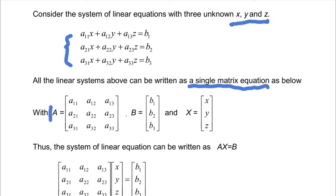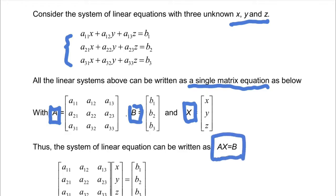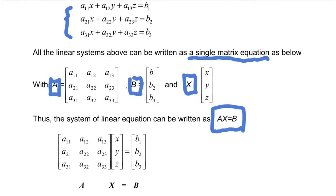With A as the matrix itself, B is all the coefficients b1, b2, and b3, and capital X is all the 3 unknowns that you want to find: x, y, z. Thus, the system of linear equations can be written as AX equals B. In matrix form, it looks like this.